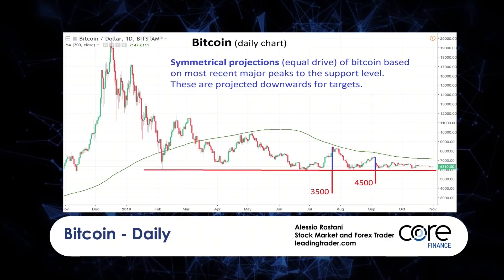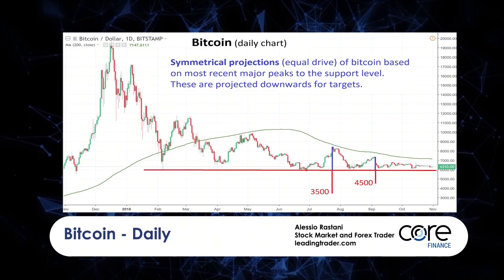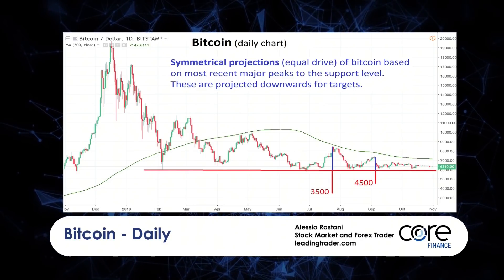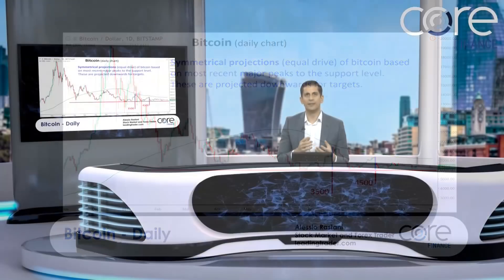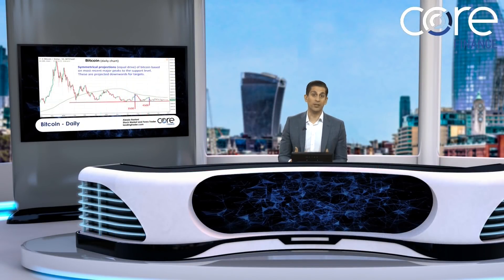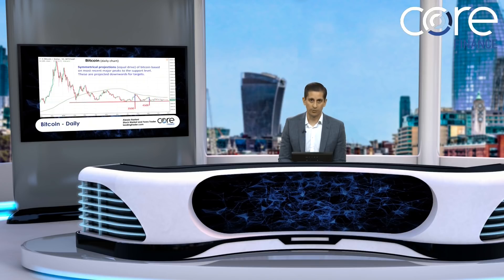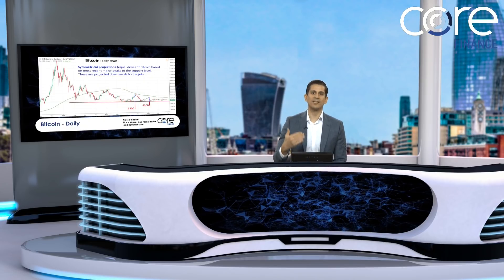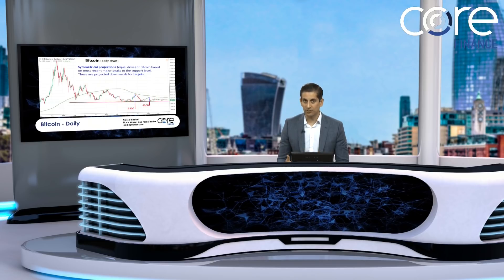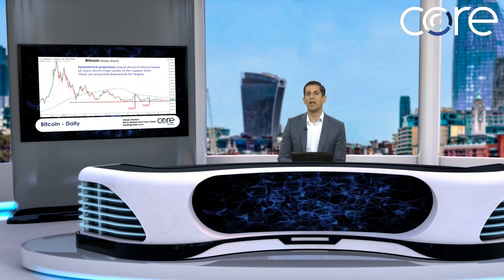I want to dig into a subject close to my heart, which is about projections on Bitcoin. I'm actually bullish on Bitcoin. I've been bullish on Bitcoin now for several months. That might come as a surprise to you, but the bottom line is I've said this before and I'm still saying it again: as long as Bitcoin remains above 6,000, I continue to remain bullish on Bitcoin. I'm expecting a breakout to the upside.